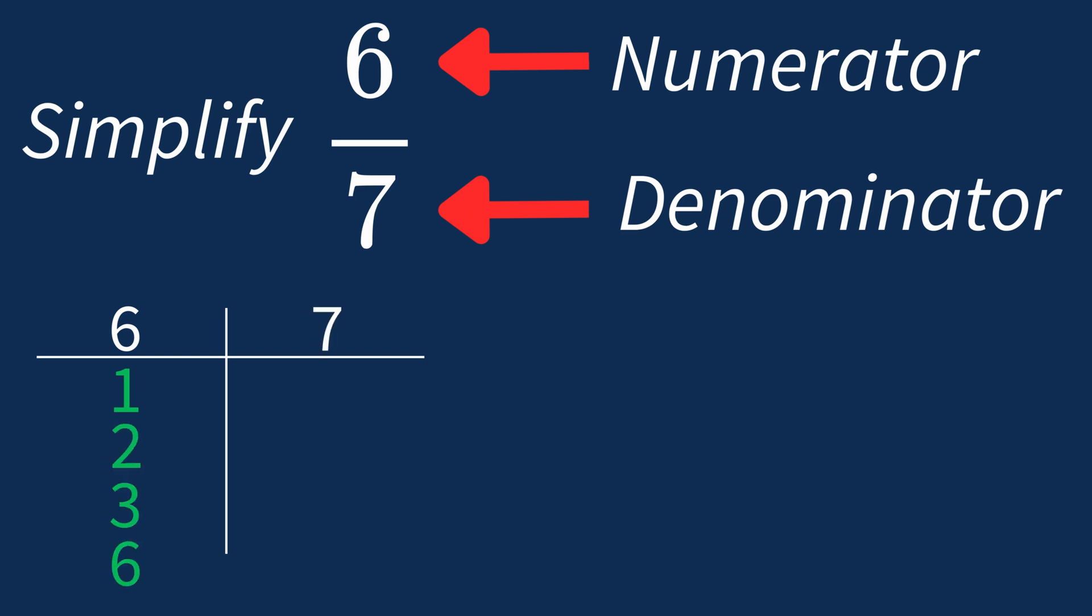For 7, the factors are 1 and 7. So in this case, the largest common factor is 1. This means we'll divide both the numerator and denominator by 1 to see if anything changes.